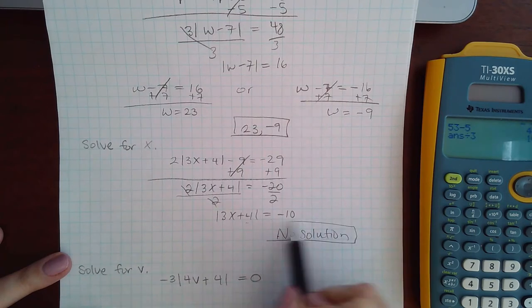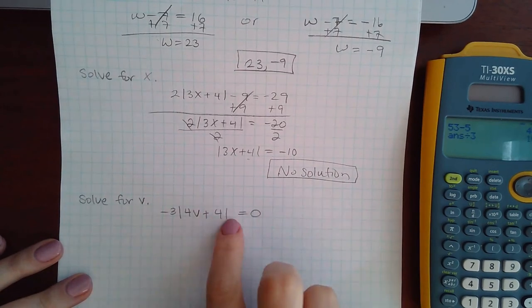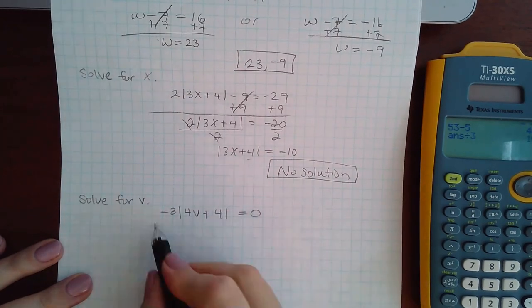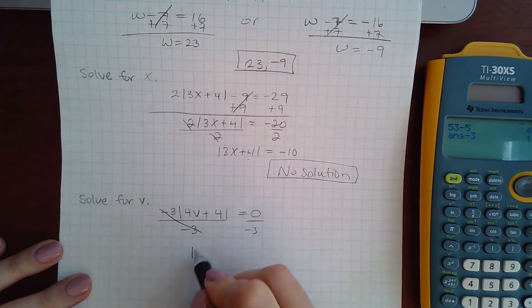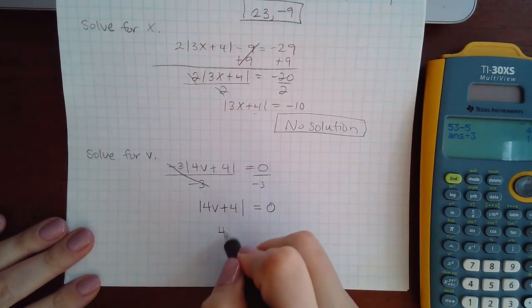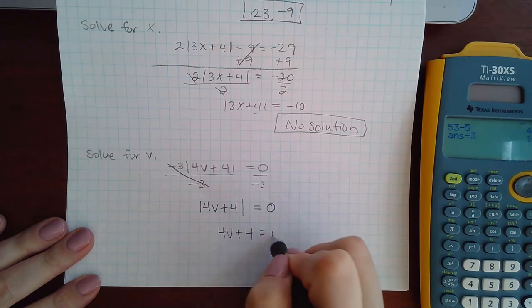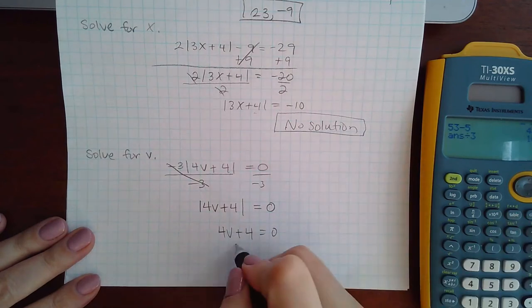And then finally my last example. I don't have anything to add or subtract, but I do need to divide both sides by negative 3. And it just so happens I still have 0, so I just need to take the inside and equal it to 0. I don't need to put or negative 0 because negative 0 and 0 are the same thing, so we solve this equation.